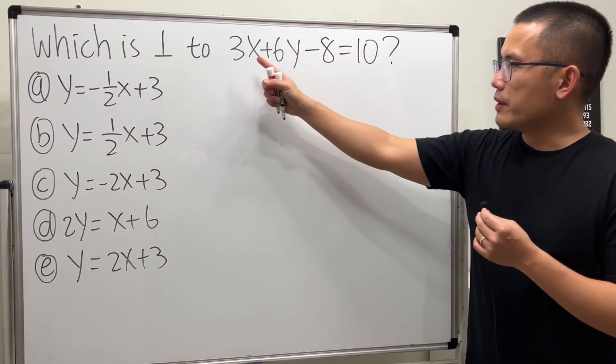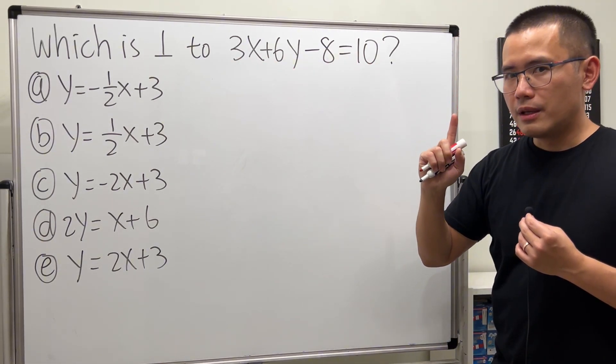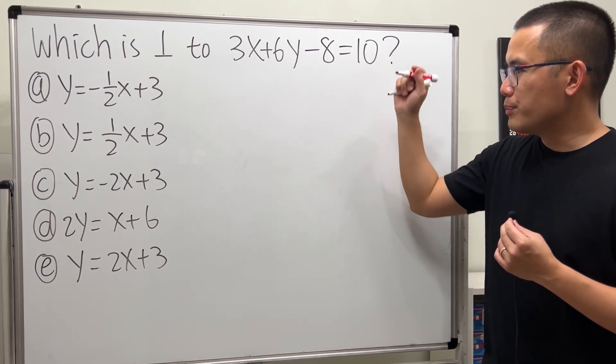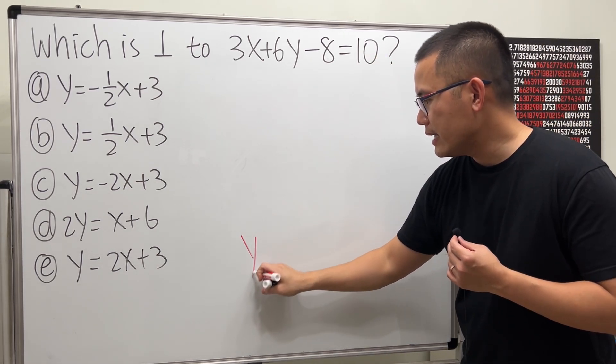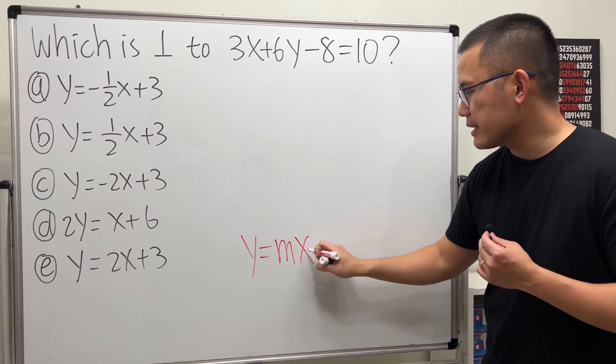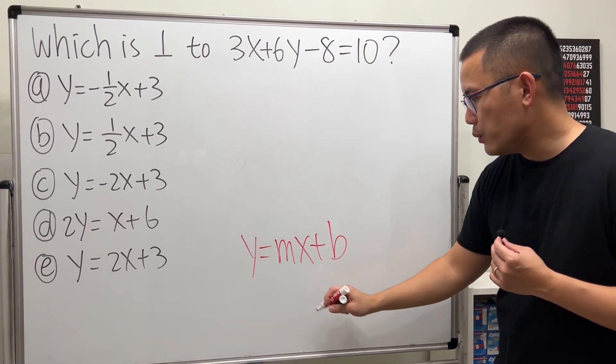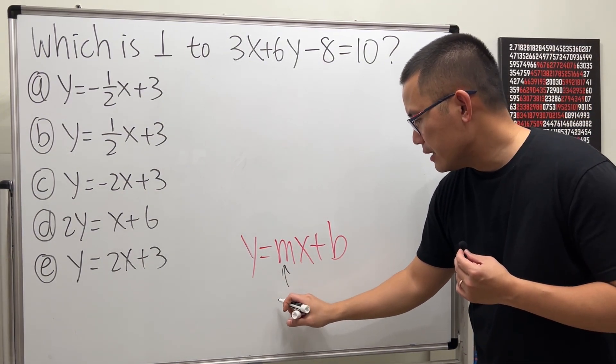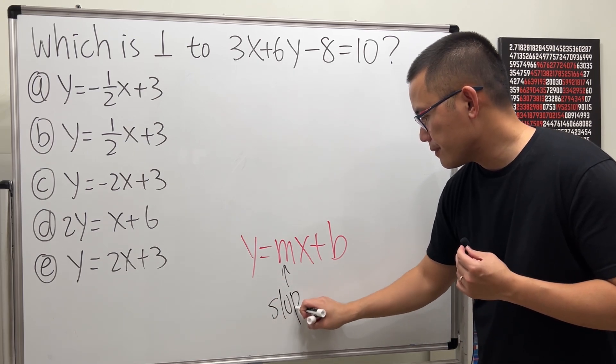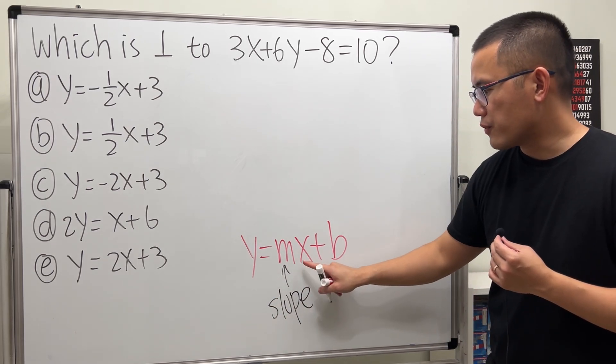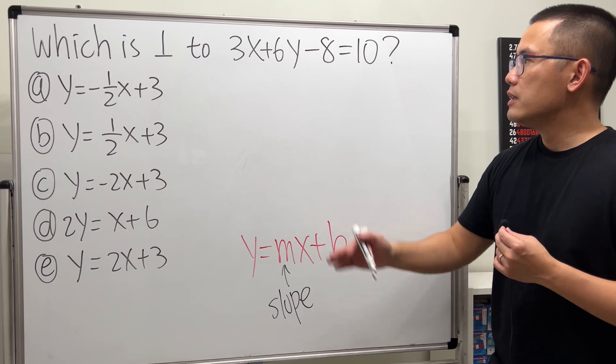So, to get a slope from this line, the best way to do so is to actually put this into the form of y equals mx plus b, because this way we can see that the m is the slope. That's the coefficient in front of the x. So, let's make that happen.